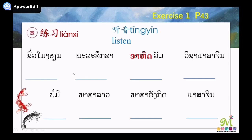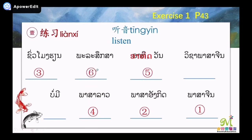Now let's listen again and check the answers. 一,中文 — 中文, this one. 二,英文 — 英文, English, this one. 三,课 — 课, this one. 四,老挝语 — 老挝语, this one. 五,星期 — 星期, this one. 六,体育 — 体育, this one. 七,没有 — 没有, this one. 八,中文课 — 中文课, this one.